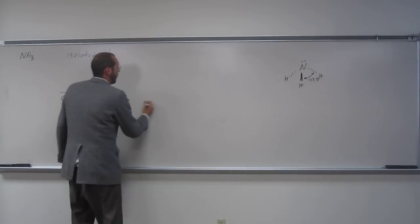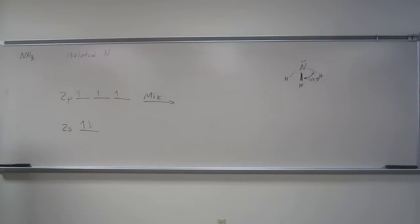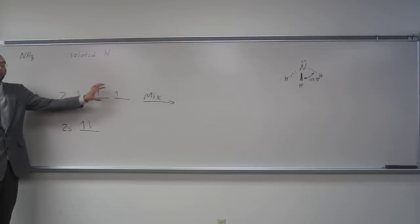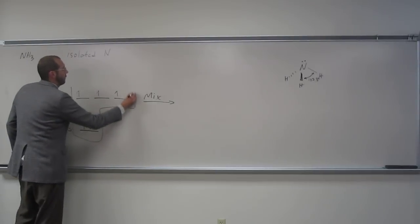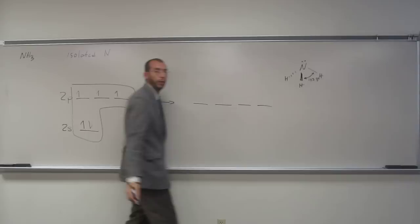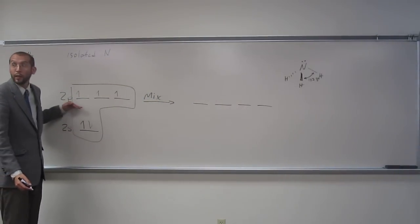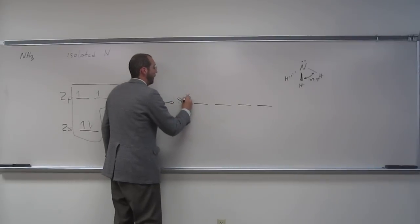So anyways, or hybridize. So we're going to mix these guys up, or hybridize. And we've got one s and three p orbitals that we're mixing. So we're putting in four orbitals. So how many are we getting out? Put in four, we get out four. They're all of equal energy. And what are they called? sp3.